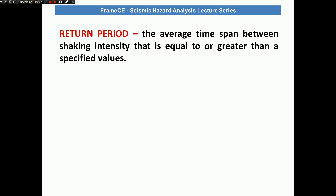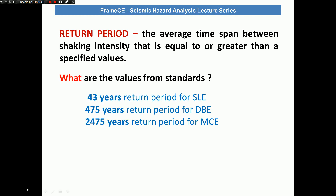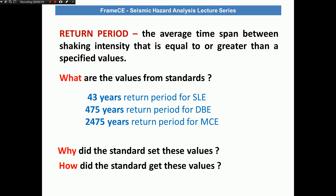I am very sure that engineers are very familiar with these values. The standard specifies that for ECLE it is a 43-year return period, for DBE it is 475 years, and for MCE it is 2475 years. Now if I ask you why did the standard set these values, I am not sure if you can answer this. And if I ask you how did the standard get these values, I am sure that the majority of engineers may not be able to answer that question.